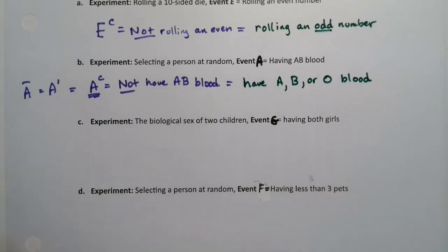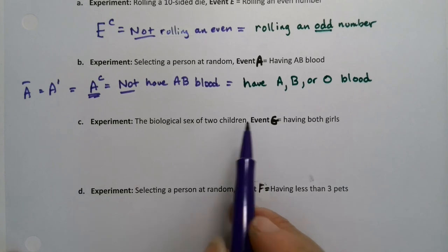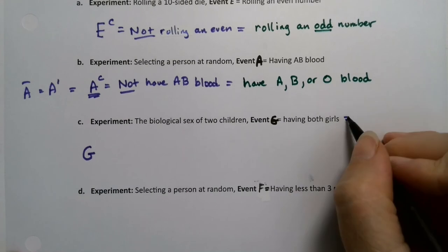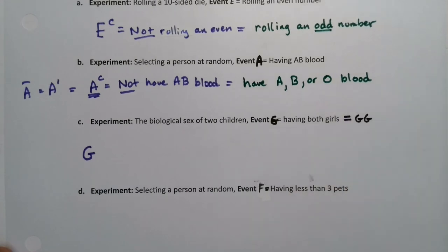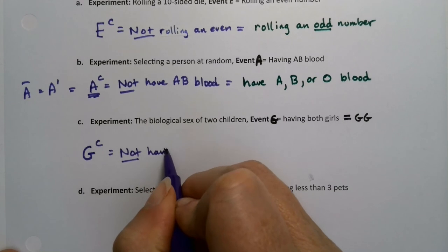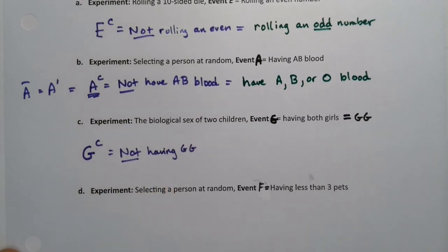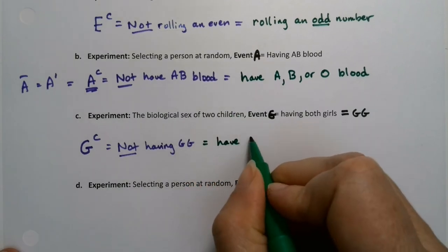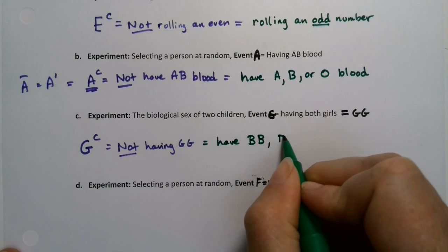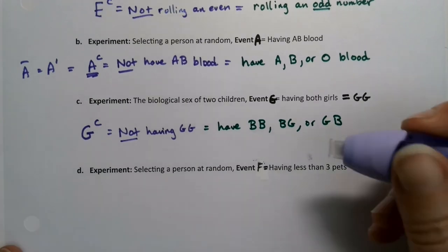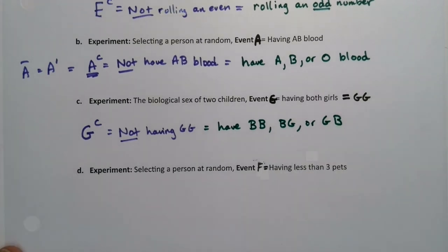What about the biological sex of two children? So event G, let me just say it over here is girl, girl, right? Cause you're having both girls like that girl, girl. So G complement would be not having girl, girl. Well, what would that mean? That would mean you have a boy, boy, boy, girl, or girl, boy. So that stuff we learned in five ones coming in handy for being able to find the sample space in our brains.